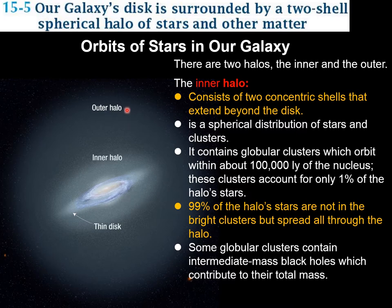There is an inner halo and then there's the outer halo. These two are concentric shells that extend way beyond the Milky Way. The inner halo has a high concentration of globular clusters but also stars, except that the globular clusters are the most visible. The stars in the globular clusters are only about 1% of the total halo stars, whereas 99% of the halo stars are not concentrated in clusters — they are spread out throughout the halo.